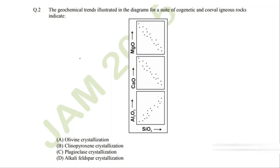A very simple question. We have been given these three trends of MgO, calcium oxide, and alumina, and we are asked about the crystallization that might be taking place using these trends.